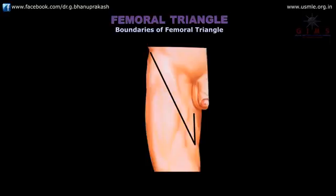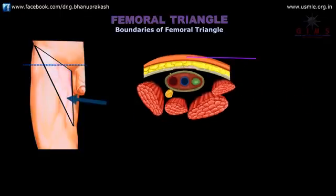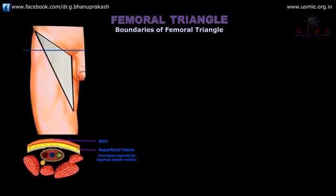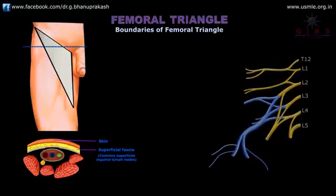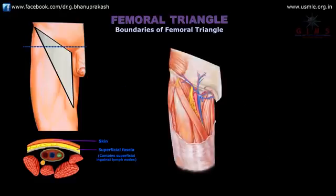The roof of the femoral triangle is formed by the following structures from superficial to deep: the skin; after the skin, the superficial fascia, which contains the superficial inguinal lymph nodes. In the superficial fascia of the front of the thigh over the femoral triangle, you can see the femoral branch of the genitofemoral nerve and the branches of the ilio-inguinal nerve, and also the superficial branches of the femoral artery with accompanying veins.